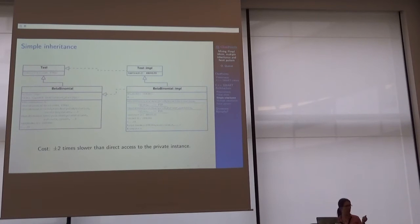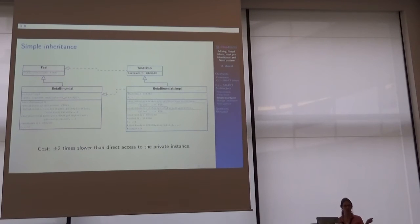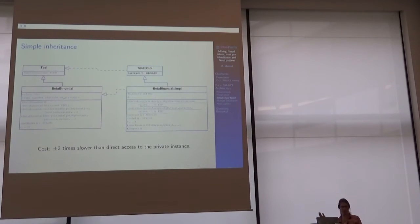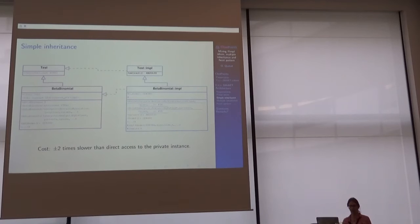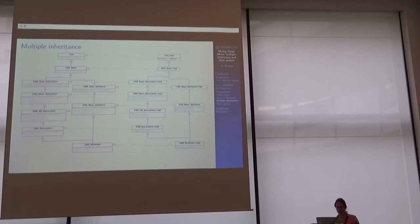The cost measurement is about two times lower than direct access to the private instance. For my application this was sufficient, because most of the time is spent constructing the object. Accessing the memory is quite fast and is done only once during the run of the program with multiple inheritance.